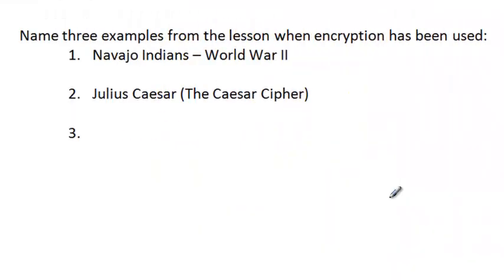And then we have the Caesar Cipher, used back in the days of Julius Caesar — more than 2,000 years ago. Here's a short history video. The first well-known cipher, a substitution cipher, was used by Julius Caesar around 58 BC, and it is now referred to as the Caesar Cipher.